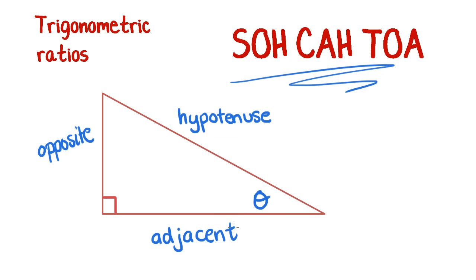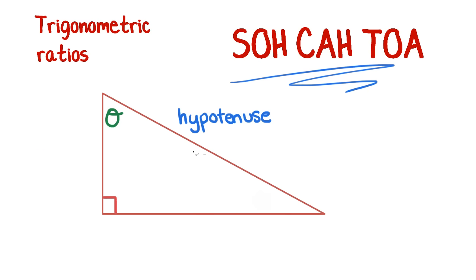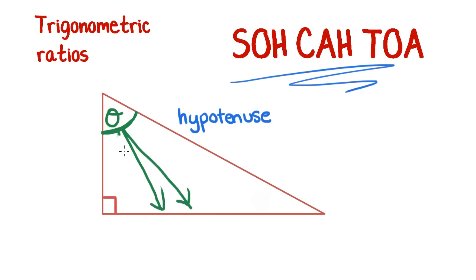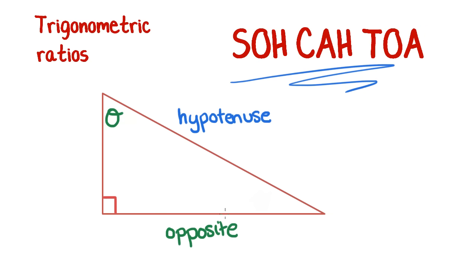Now if we were talking about a different angle — say this one up here instead — then our sides would be labelled differently. The hypotenuse stays the same because it's always opposite the right angle. But now the side that our new mystery angle splays out to create becomes the opposite, and the one left over next door would be the adjacent.